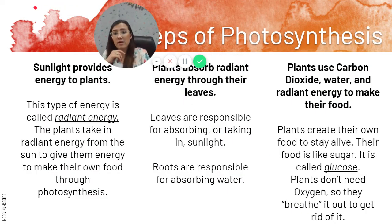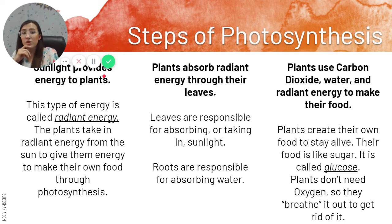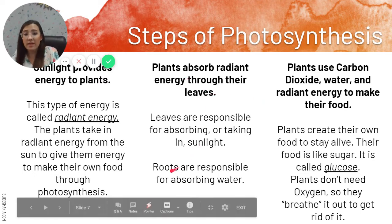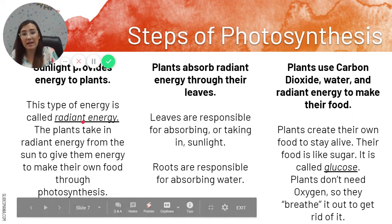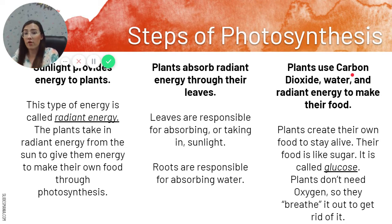Here are the steps of photosynthesis. The first step is for sunlight to provide energy to plants — that radiant energy is needed for plants to have energy to make their own food. Without the sun, they don't have enough energy to do photosynthesis. The roots absorb water, the leaves absorb the radiant energy, and then the plant absorbs carbon dioxide. It can use all those ingredients to do photosynthesis.